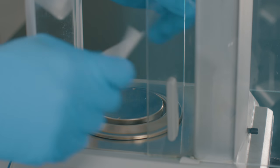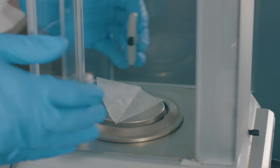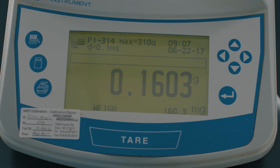Place the paper on the balance pan. Close the side doors and press the tare button to zero out the paper.